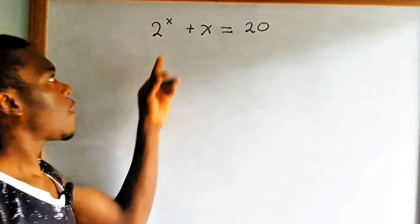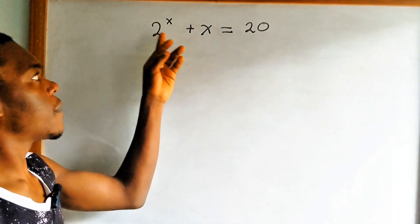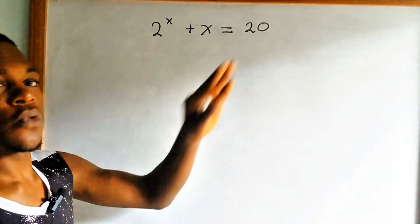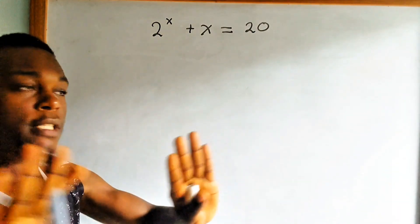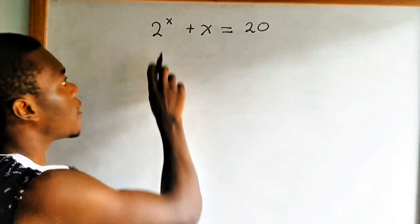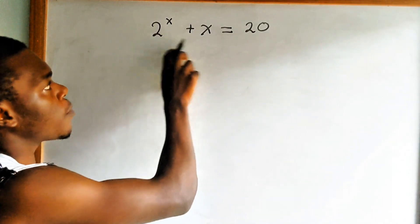Here we are, having this question to solve for x, given that 2 to the power x plus x is equals to 20. I'll use a sharp method to solve this.